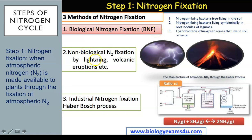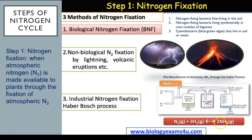Also, lightning and volcanic eruptions cause the oxidation of nitrogen gas to nitrate, which is then washed into the soil. And by the industrial Haber process, a nitrogen-fixing process used to make fertilizer, nitrogen and hydrogen gases are combined under pressure in the presence of iron as a catalyst to form ammonia.